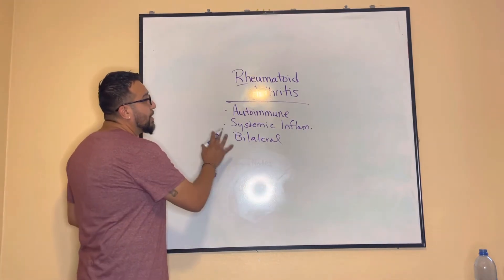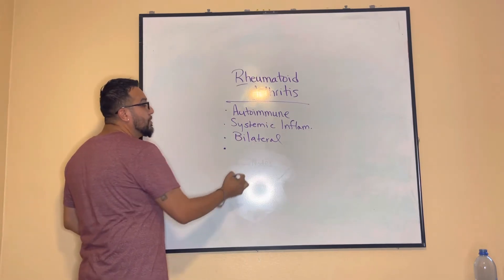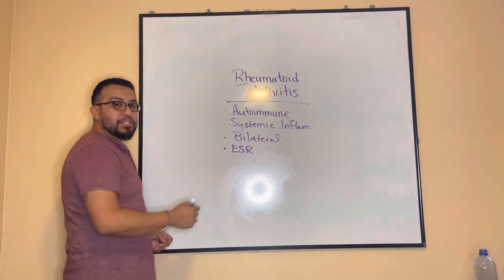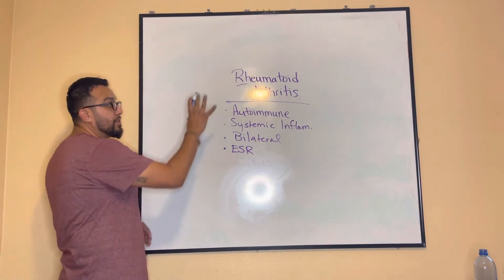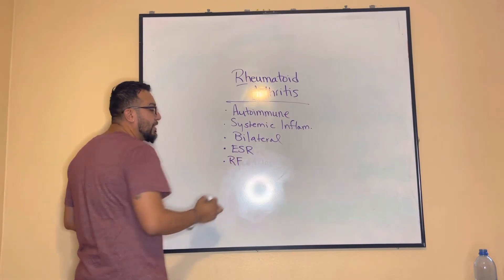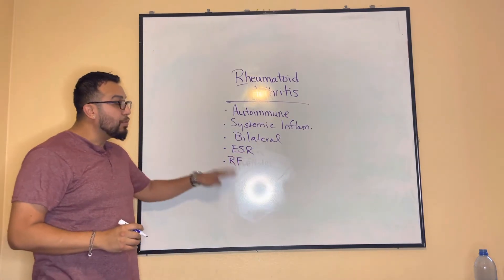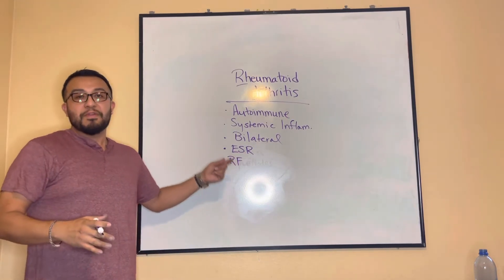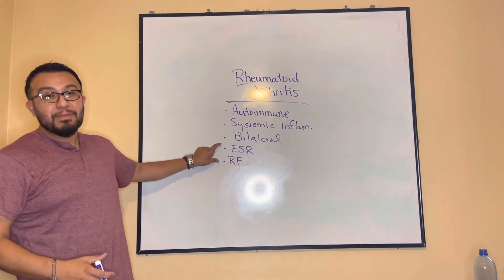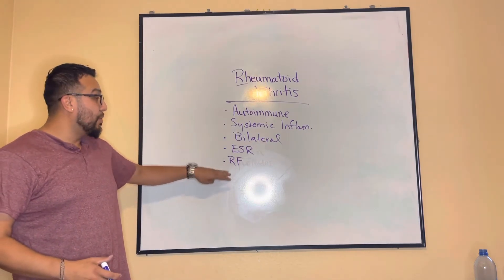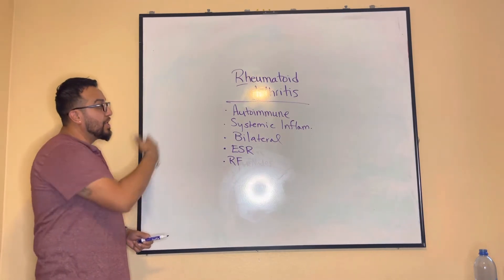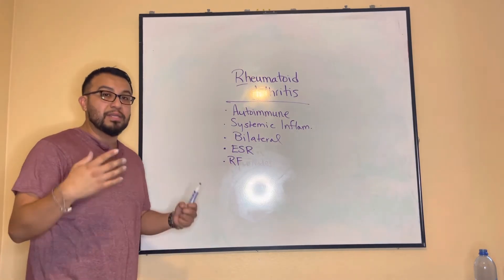When it comes to rheumatoid arthritis, the ESR — erythrocyte sedimentation rate — will be elevated because there's an inflammatory response. You're also going to look for the rheumatoid factor in the bloodstream, which can narrow down or rule out non-inflammatory, non-systemic, or non-autoimmune issues. That's how we differentiate between osteoarthritis and rheumatoid arthritis in diagnostic testing.